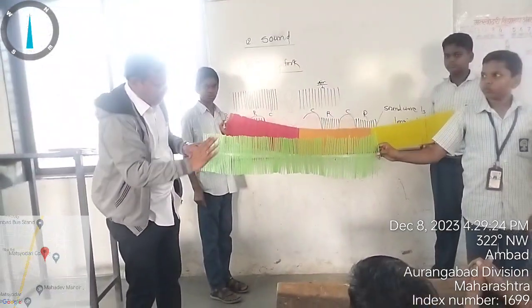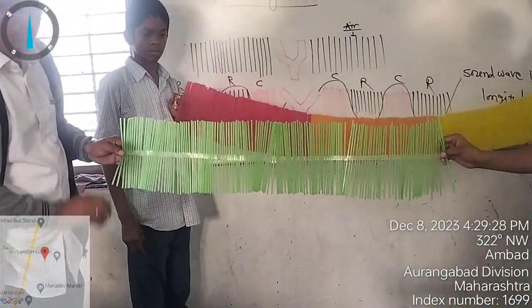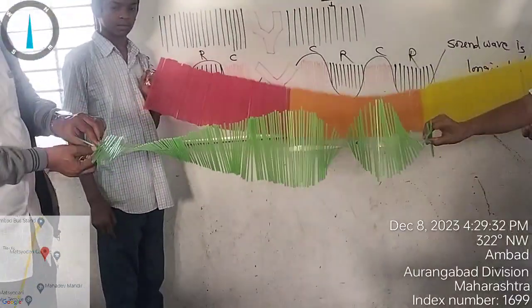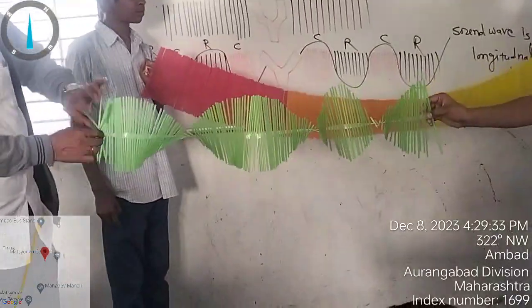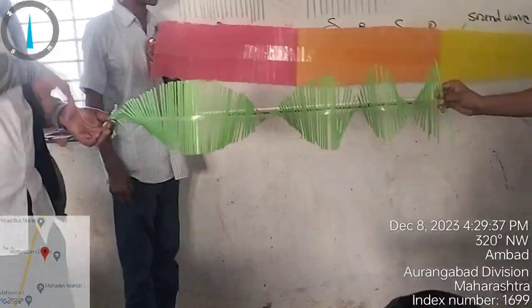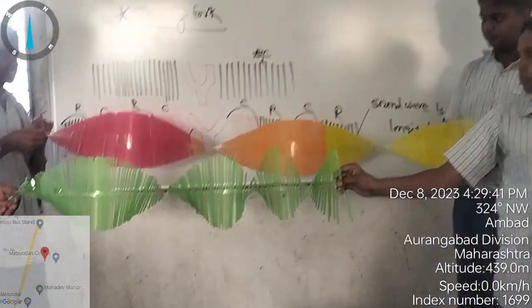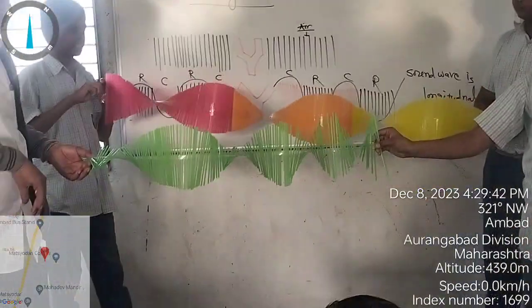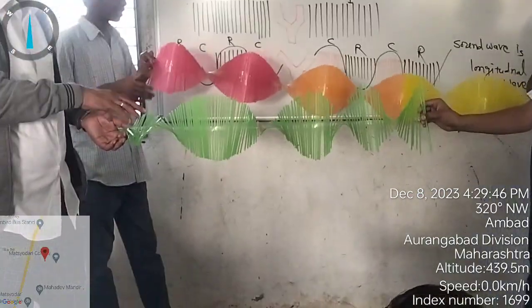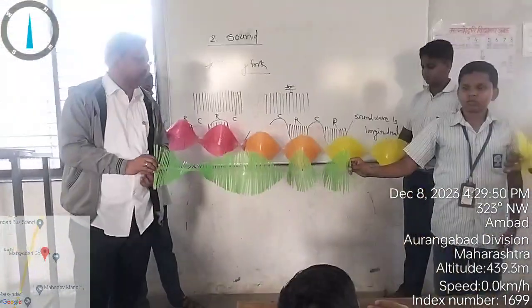So this is not a transverse wave. Now we can see this wave like a structure — you can make this. This is all about the sound waves.